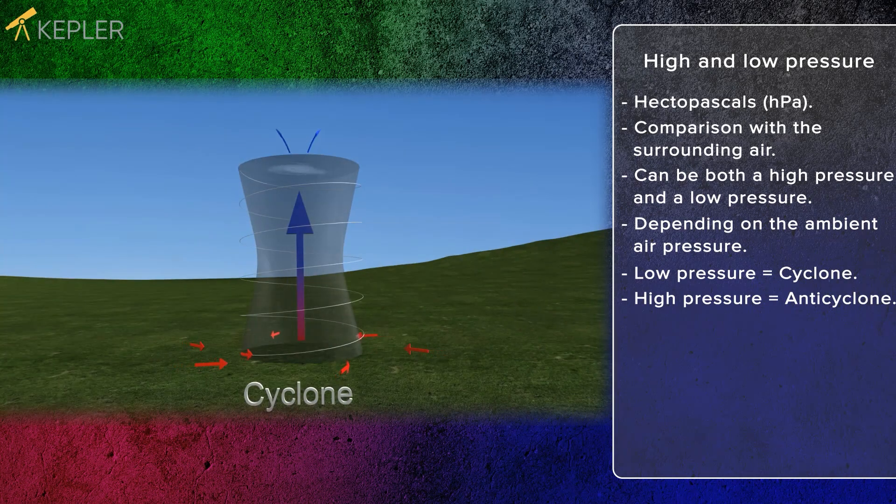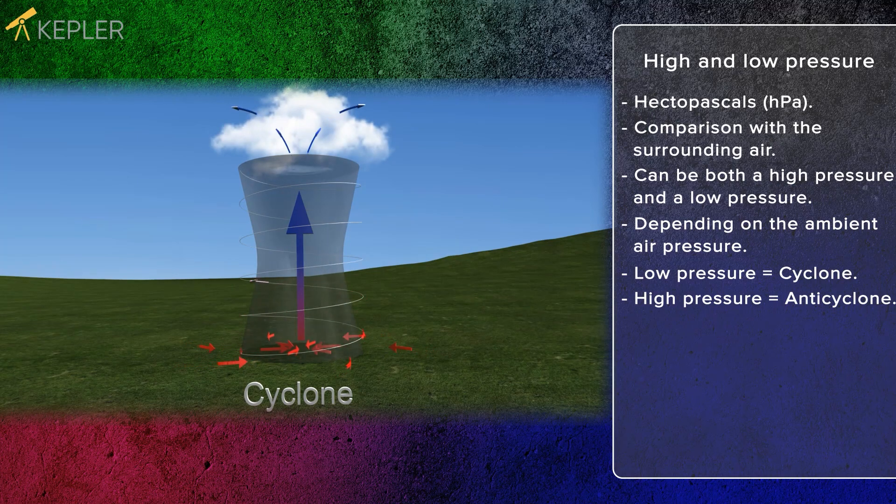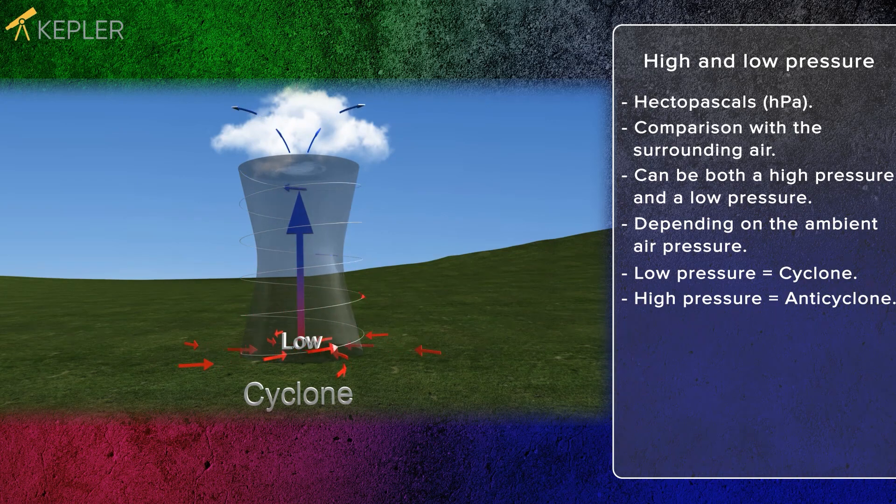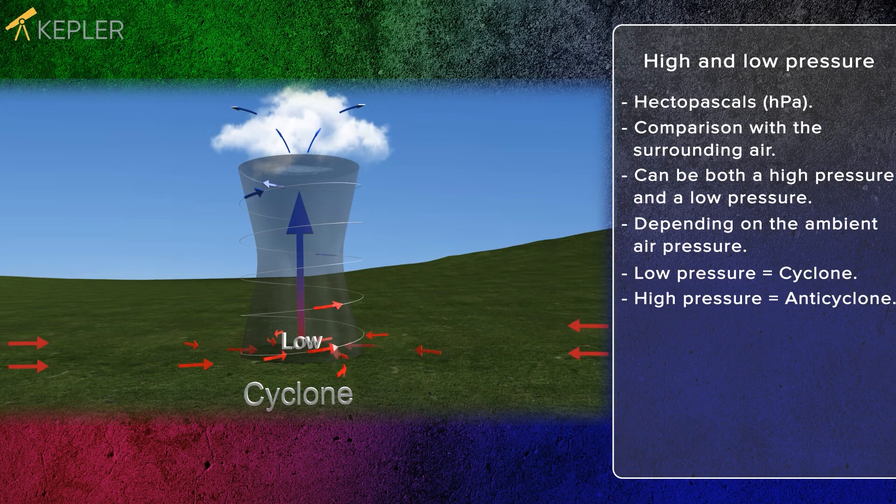As the air rises it cools and a cloud is formed. The rising air leads to a low pressure at the ground because the air rises from it. As the air rises it is replaced by new air from the surroundings. In the northern hemisphere a low pressure system rotates anticlockwise.